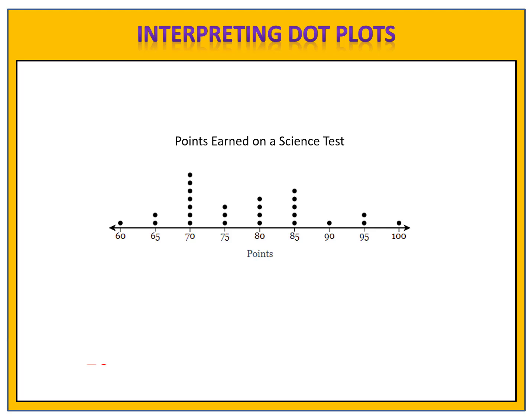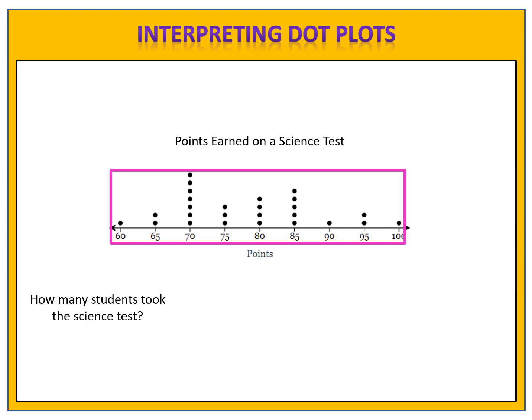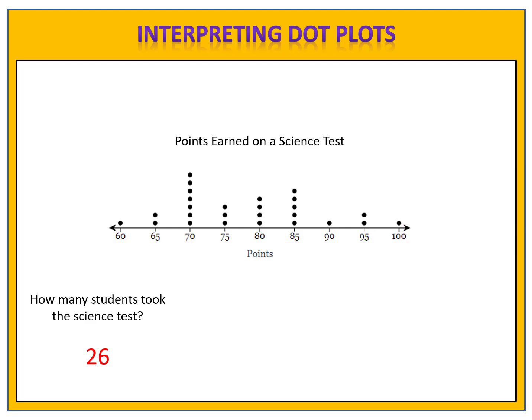There are other types of questions we could answer as well. How many students took the science test? Since each dot represents one student, we simply count all of the dots. There are 26 of them, so 26 students took the science test. What is the mode, or the most frequent score earned on this test? Look for the score that has the most dots. That would be 70. 70 has seven dots, so the mode is 70.